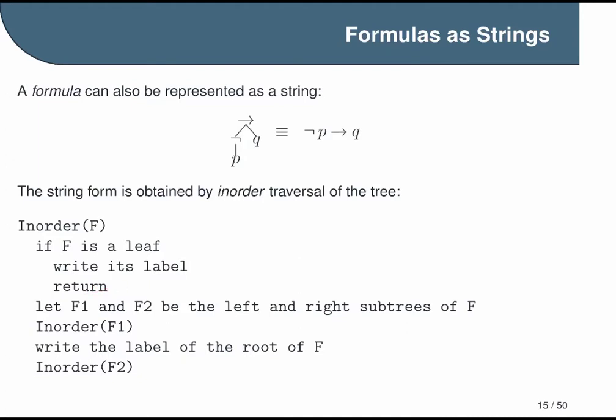Next, it handles the recursive step. In this case, F is not a leaf. So we look at its left and right subtrees, which we call F1 and F2, respectively. And then we just repeat the procedure in order again on the left child. When we come back, we write the label of the root of F. And then we call in order on the right child.